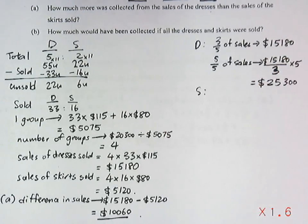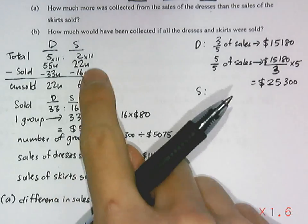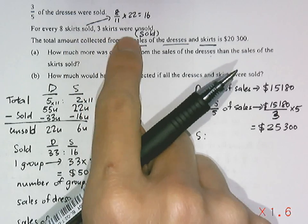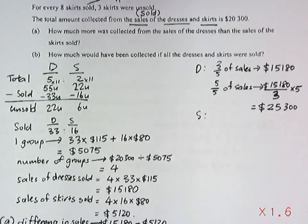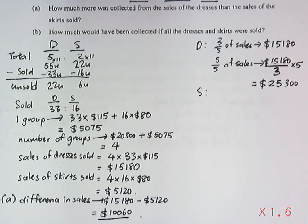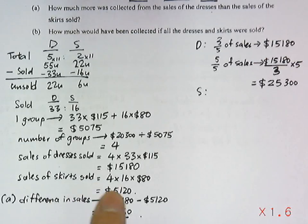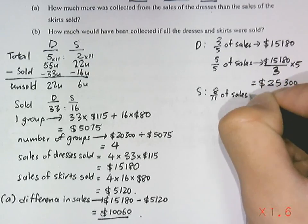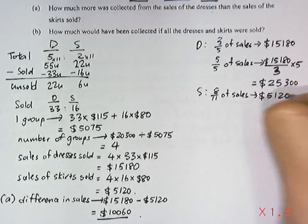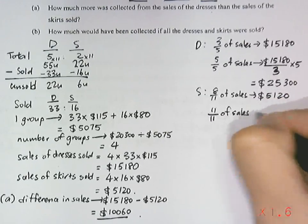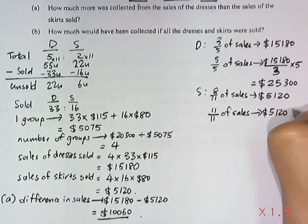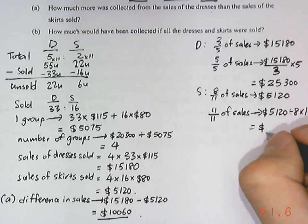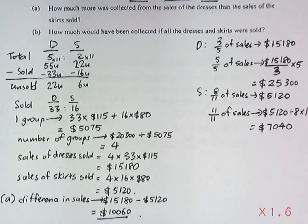Similarly for the skirts: eight out of eleven were sold, and three out of eleven were unsold. The five thousand one hundred and twenty dollars from skirts sold accounts for eight-elevenths of total skirt sales. So if all skirts were sold, seven thousand and forty dollars would have been collected.